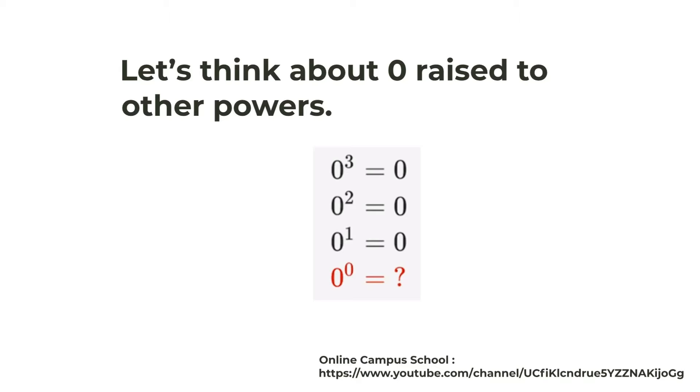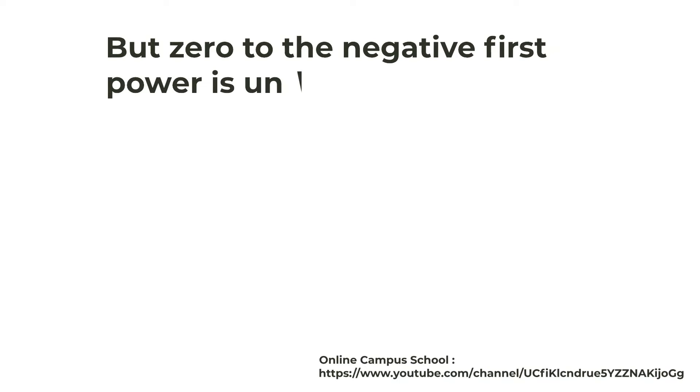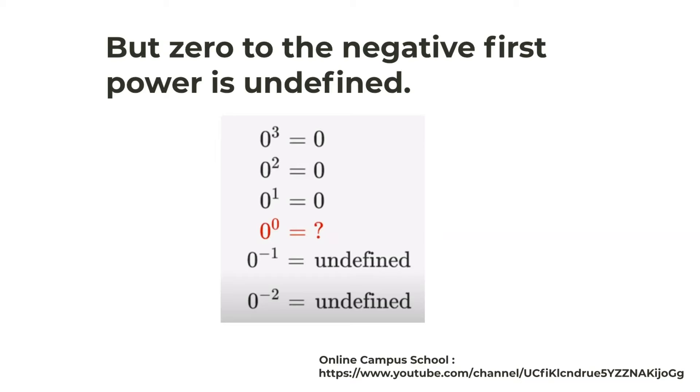But zero to the negative first power is one over zero, which is undefined, and same with zero to the negative two power. So the negative exponents can imply that zero raised to the power of zero should be undefined.